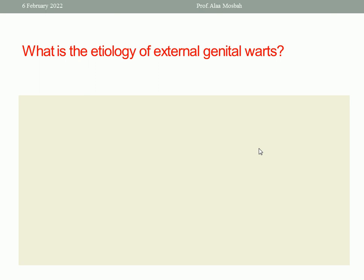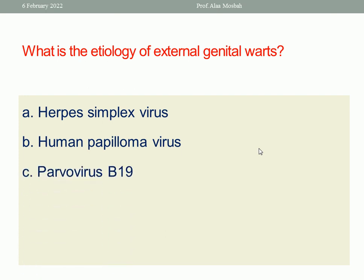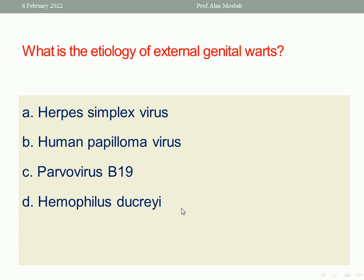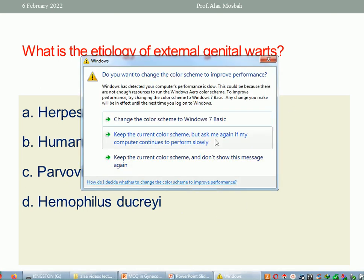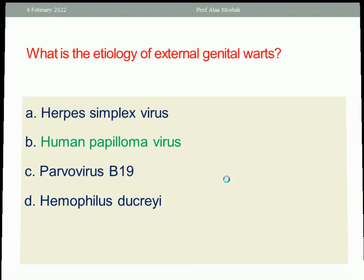Next question: what is the etiology of external genital warts? Options include: herpes simplex virus — which causes vesicles and ulcers — human papillomavirus — which causes genital warts — parvovirus B19 infection causing fever and erythema, or Haemophilus ducreyi causing chancroid. The most correct answer is the human papillomavirus.